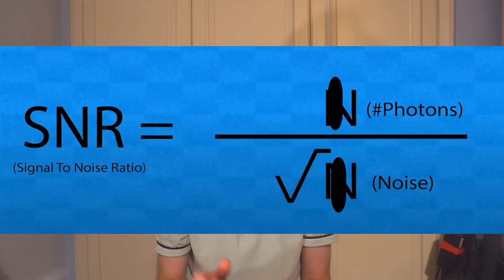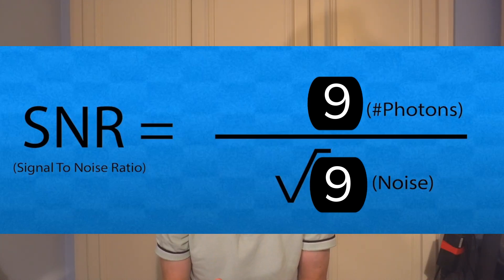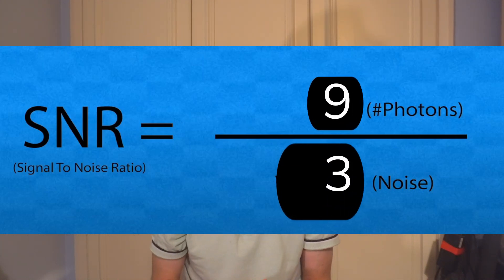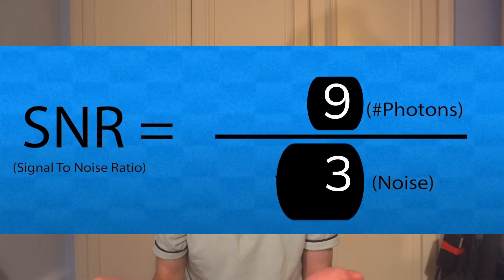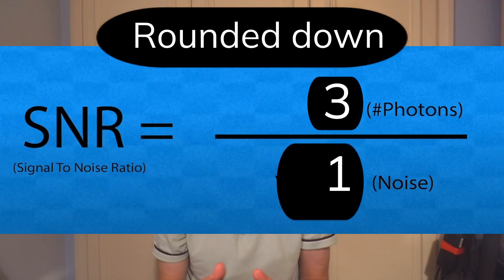I may have oversimplified the numbers here just to make it easy, but if we take a sensor with just one single pixel and it collects nine photons per second, its signal-to-noise ratio is calculated as nine divided by the square root of nine, which is three. So nine over three gives a 3:1 signal-to-noise ratio, which is quite high — a third of it is noise.